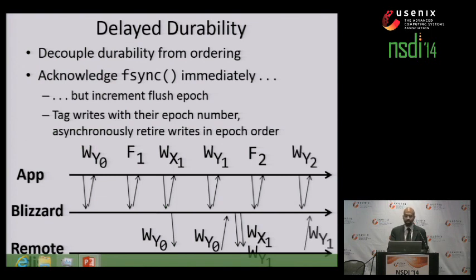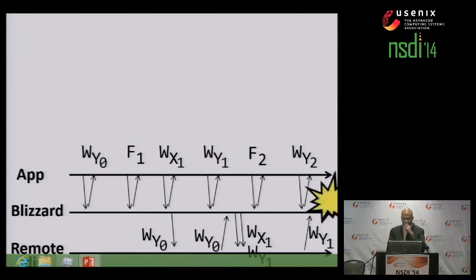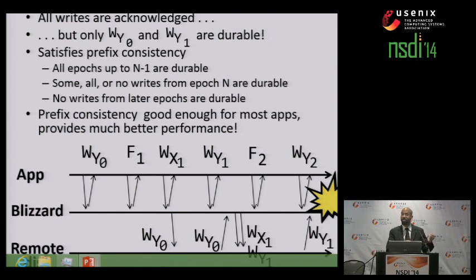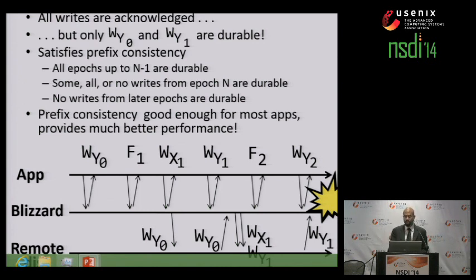Suppose that Blizzard crashes at some point. Note that all writes have been acknowledged to the client, but only the first and second writes to Y are actually durable. This is okay because Blizzard has provided something known as prefix consistency. All writes up to some epoch N minus one have become durable, some or all writes in epoch N are durable, and no writes from subsequent epochs are durable. Essentially, Blizzard has lengthened the window of potential data loss in exchange for much better performance, and in practice many applications are happy with this consistency model.